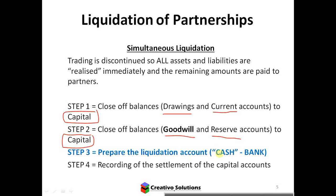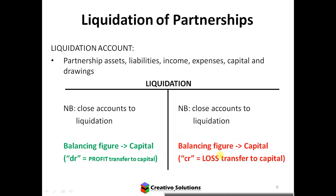You then prepare a liquidation account which contains everything, and you'll also have a bank account open. Simultaneous liquidation is a lot easier than piecemeal. Piecemeal is more challenging because there are a lot more steps in terms of liquidating assets in stages. The last step is to record the settlement of the capital accounts. The liquidation account is like any other T-account — you'll have a debit side and a credit side. We close off all assets and liabilities to this one liquidation account.